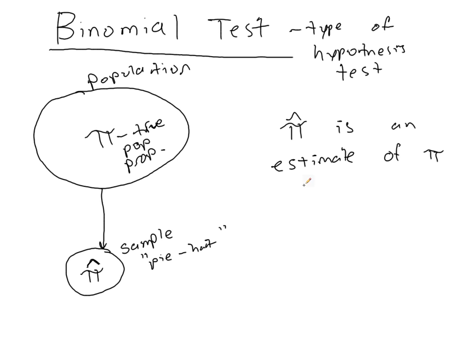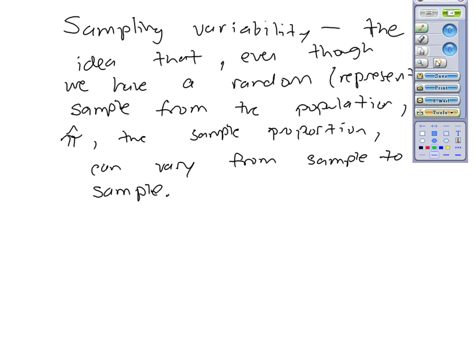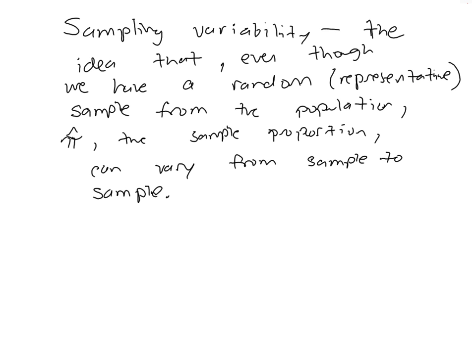Okay, well, so since pi is the true population proportion, we're trying to estimate it and trying to make some grander conclusions about it, there's a little problem here. We have an idea called sampling variability, which basically means the idea that even though we have a random representative sample from the population, which we call pi hat, the sample proportion can vary from sample to sample.